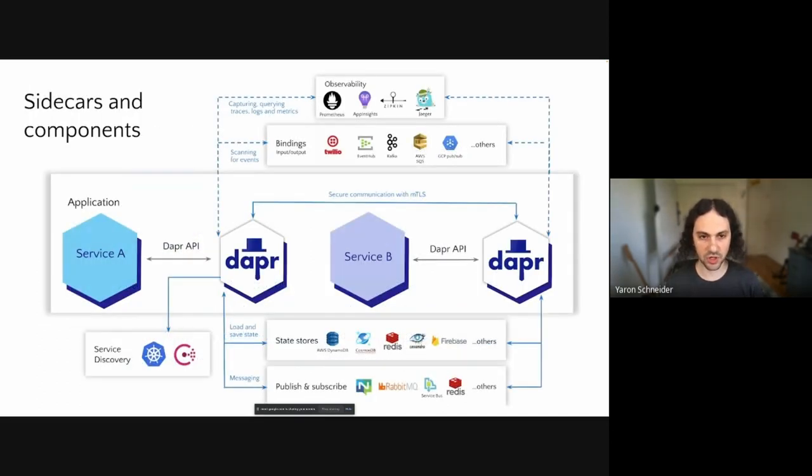Dapper at its very heart has the concept of components, which are how developers talk to these different APIs, or rather the actual implementation behind those APIs. So for example, if a developer talks to the Dapper state API, an operator or developer can basically configure Dapper based on the environment they're running in to talk to different databases. So for example, if they're on AWS, they will configure Dapper to run against AWS DynamoDB. If they're running in Azure, it might be Cosmos DB. If they're running on-prem or locally, it might be Redis or Cassandra, Firebase for Google Cloud.